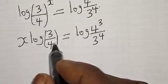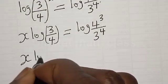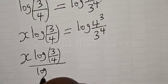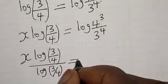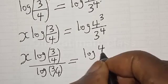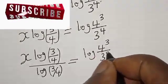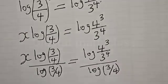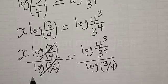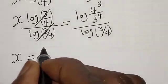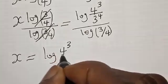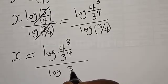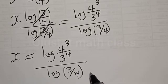Let's divide both sides by log(3/4). Then x times log(3/4) divided by log(3/4) equals log(4 raised to power 3 divided by 3 raised to power 4) divided by log(3/4). This cancels and we have x equal to log(4 raised to power 3 divided by 3 raised to power 4) divided by log(3/4).